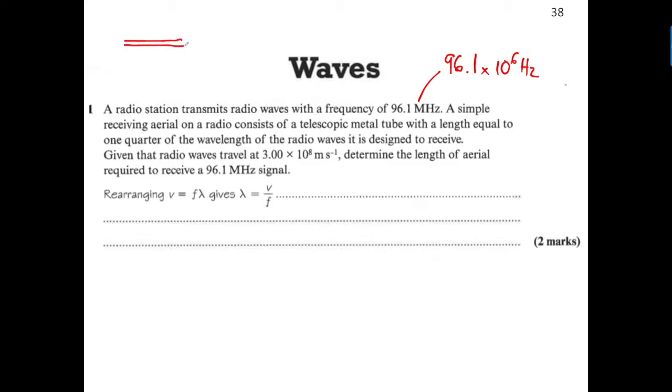They're saying it has a length equal to a quarter of a wavelength. To give you some idea, a full wavelength would be that - this is a standing wave. That would be from here to here, one wavelength. The aerial is basically a quarter of the length, so about here.